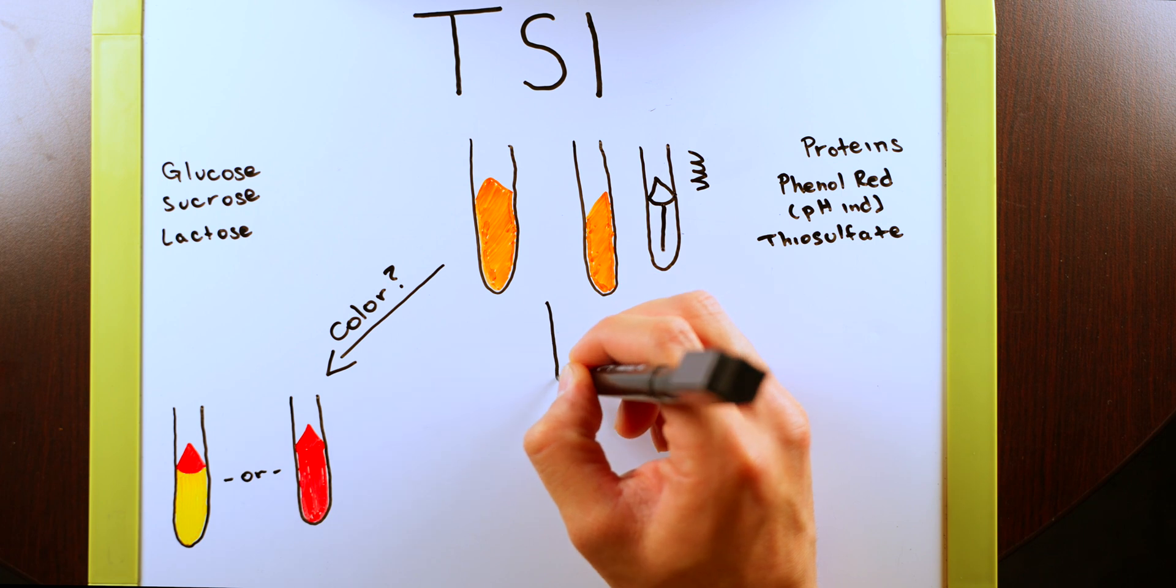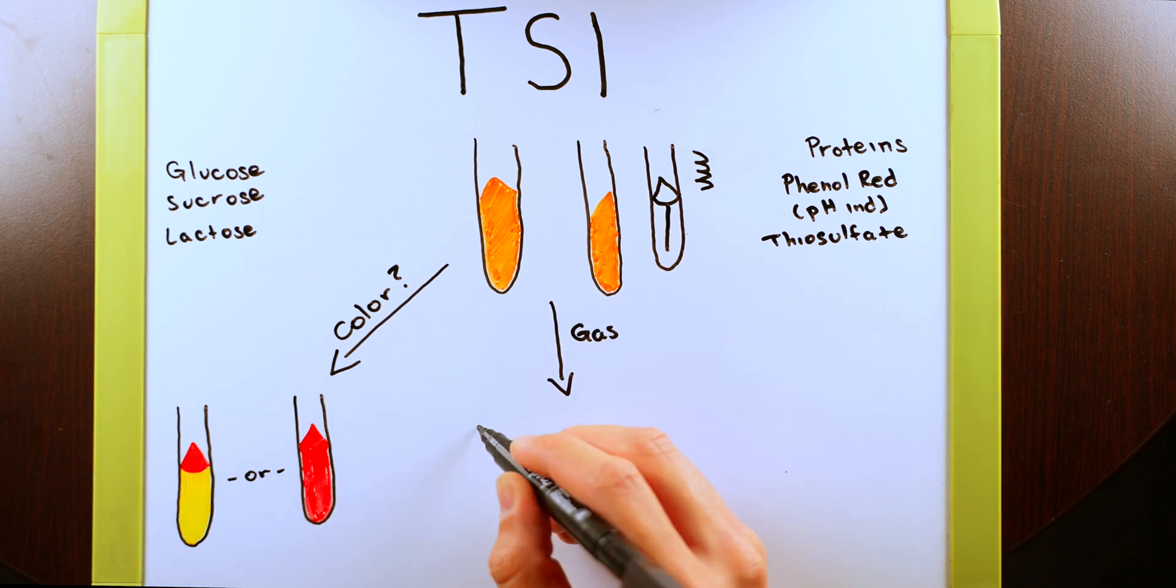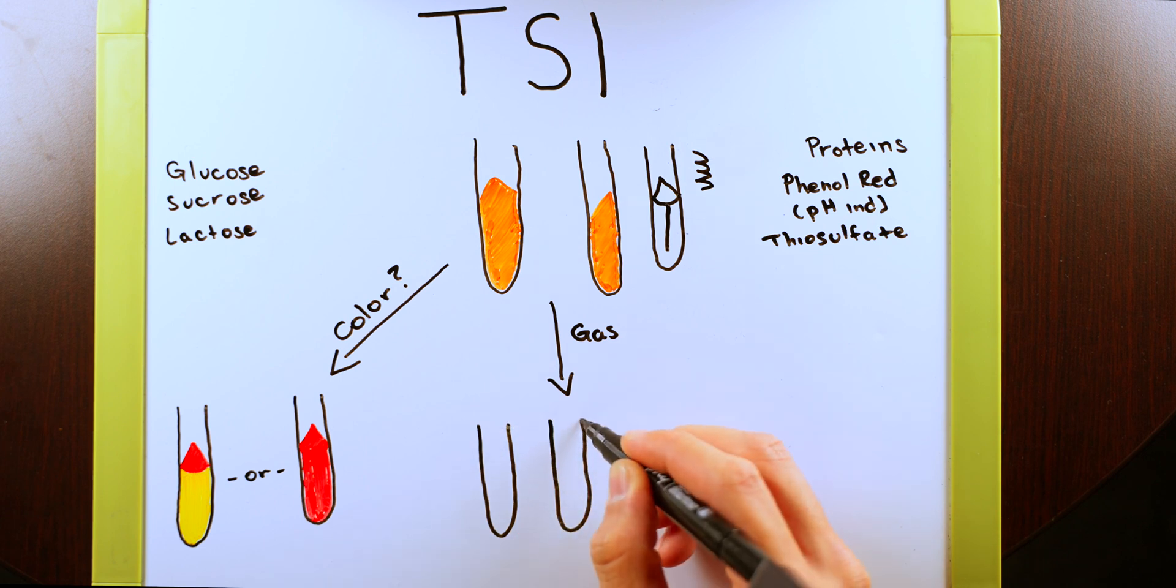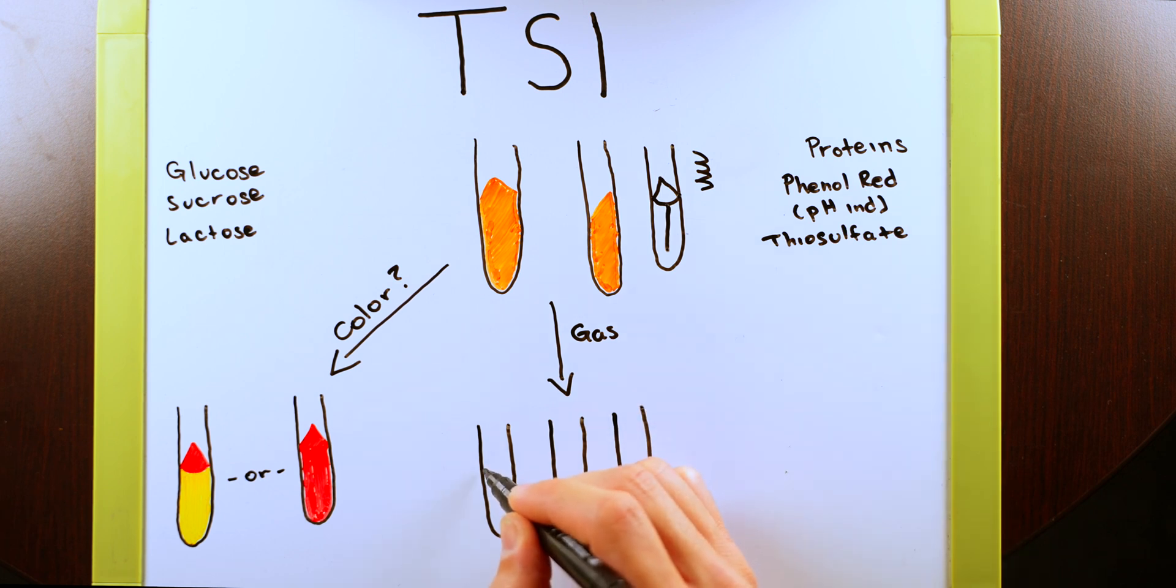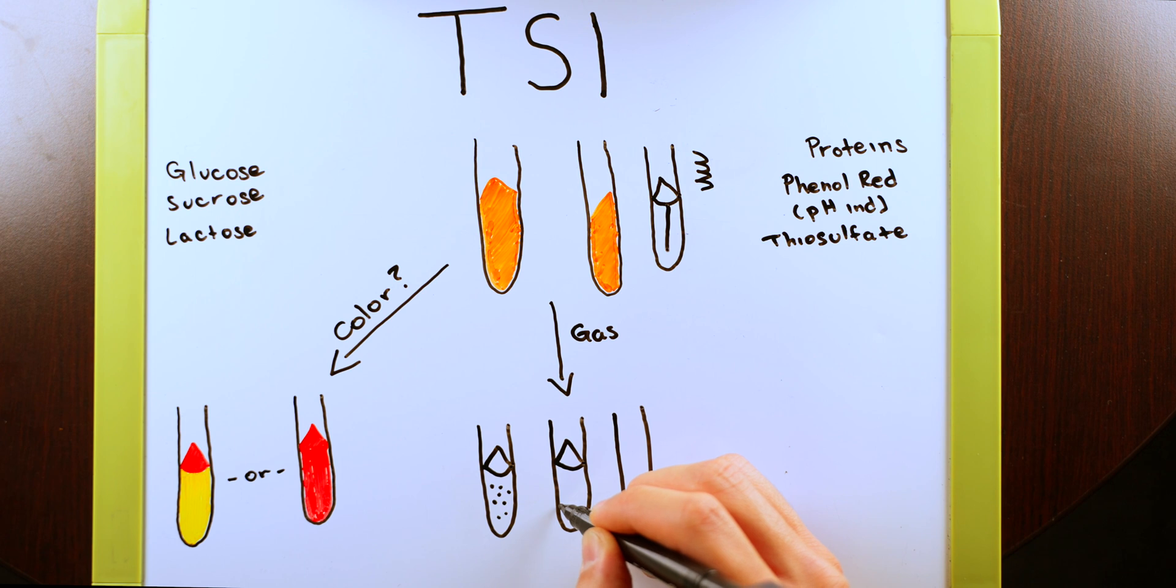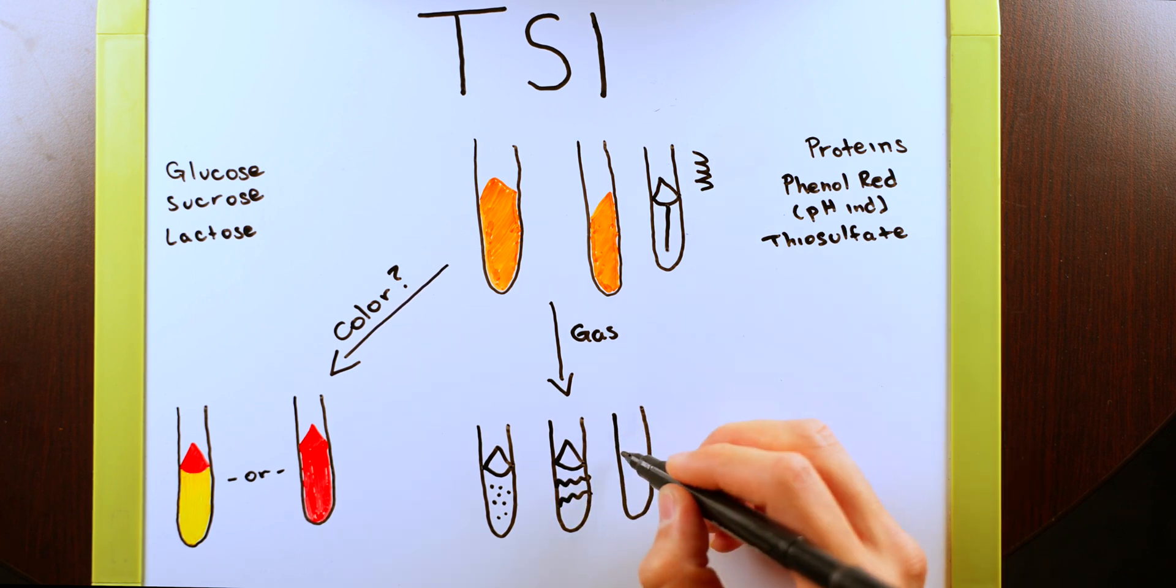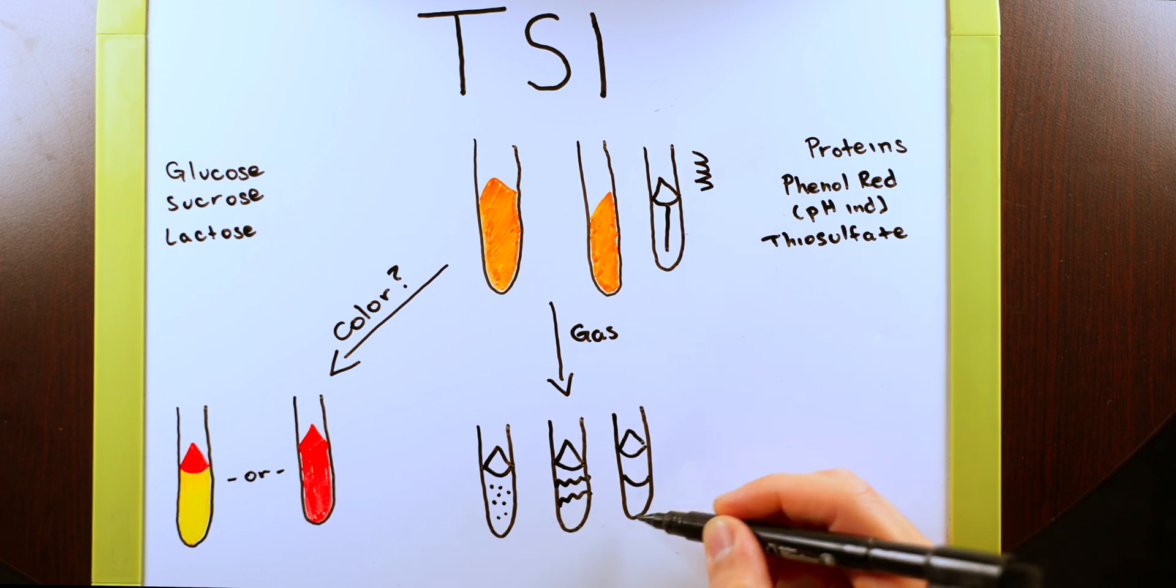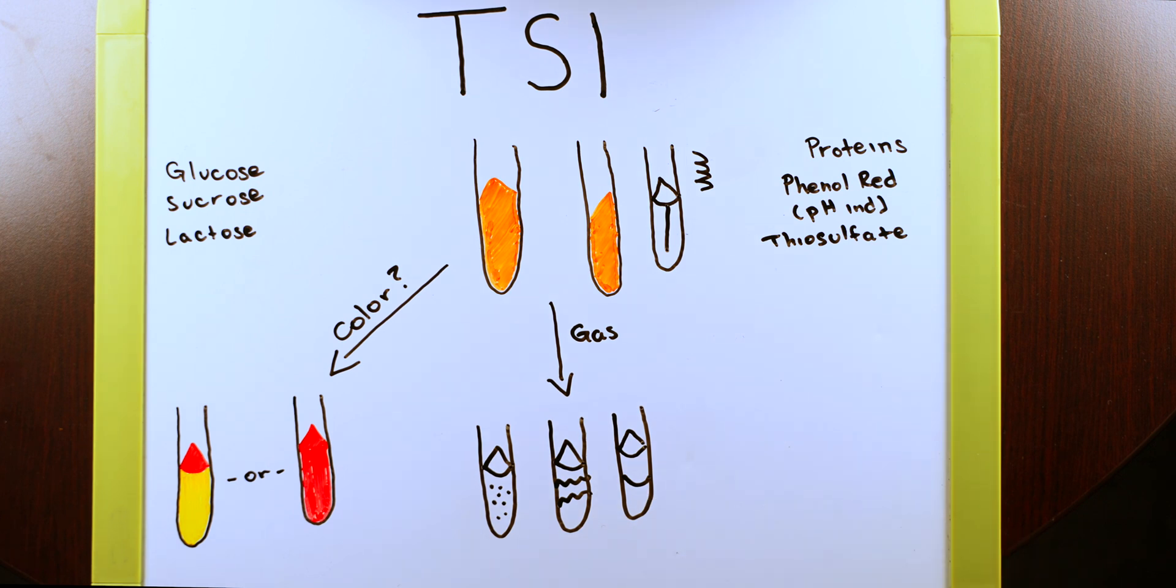The second thing that we want to look for is, was there gas production? And when it comes to gas production, we want to look for one of three things, all meaning the same thing, that there was gas production or CO2 production to be specific. You could have either first some sort of bubbles that develop in the test tube. You could also have it where the test tube has some sort of crack in it. And you have two different sets of media now. The last one that you could have is if the entire agar shifted upwards. So there's a gap here now, all of this means that you had gas production in the metabolic processes of the microbe.